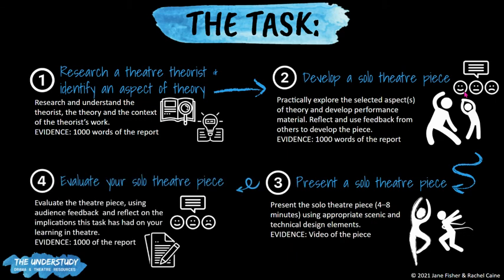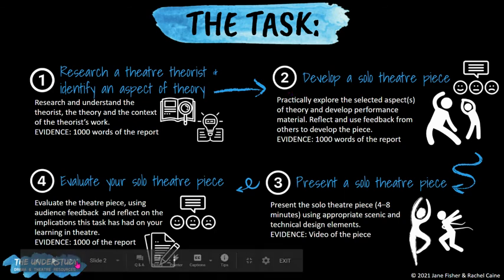Part D is where you evaluate your overall performance. Once you finish your performance you will get feedback from the audience — you can ask them questions — and in this section of your solo theatre report you will evaluate the theatre piece as a whole. You'll use the feedback from the audience, reflect on the implications and challenges you met in this task, and also how this task has informed your learning in theatre as a whole. The IB really wants to hear about that last point, particularly because you're a HL student. This forms the final thousand-or-so words of your report, giving you roughly a thousand words each for Parts A, B, and D.